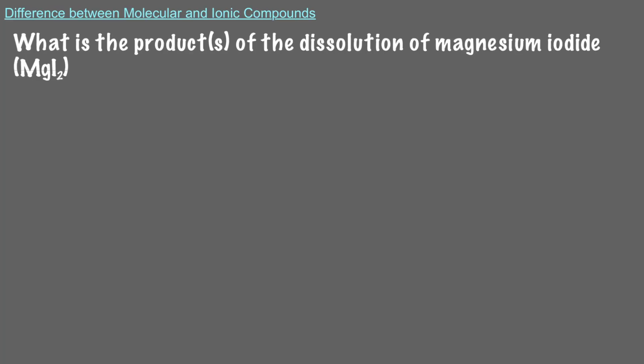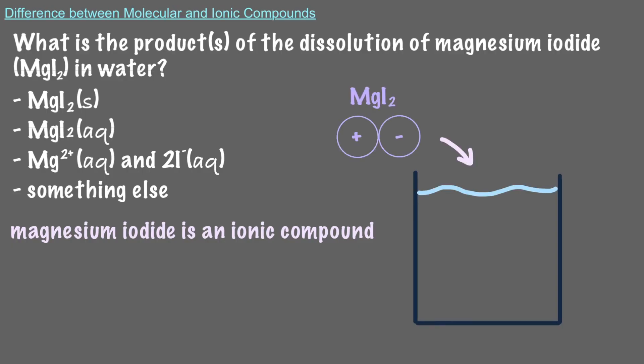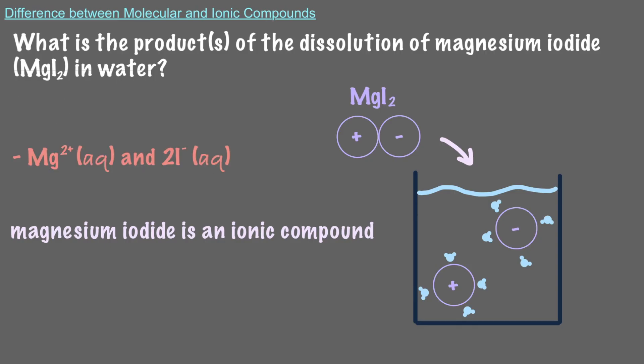Let's try another one. What is the product or products of the dissolution of magnesium iodide in water? Magnesium is a metal and iodine is a nonmetal, so magnesium iodide is an ionic compound. That means the anions and cations will dissociate from each other when dissolved in water. So our products are aqueous magnesium cations and aqueous iodide anions.